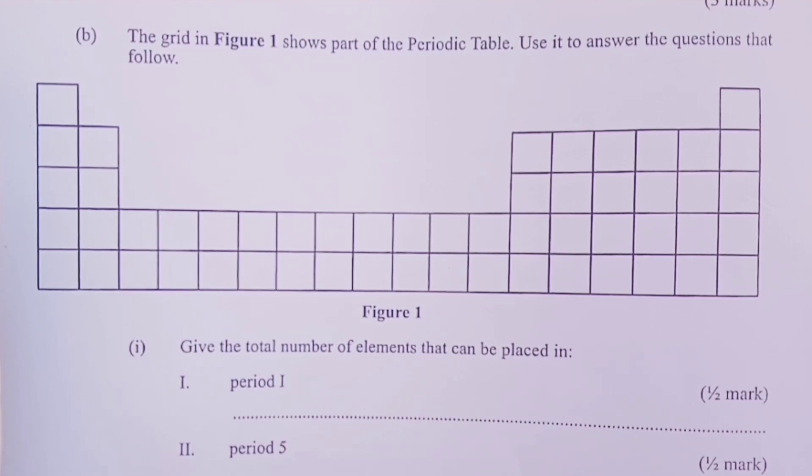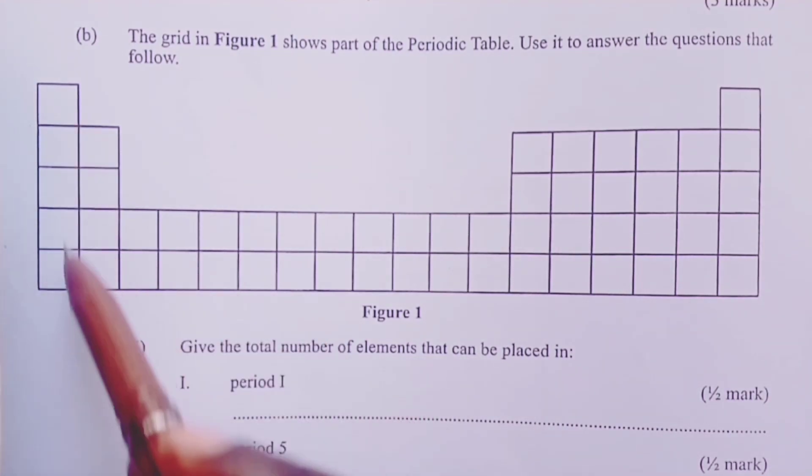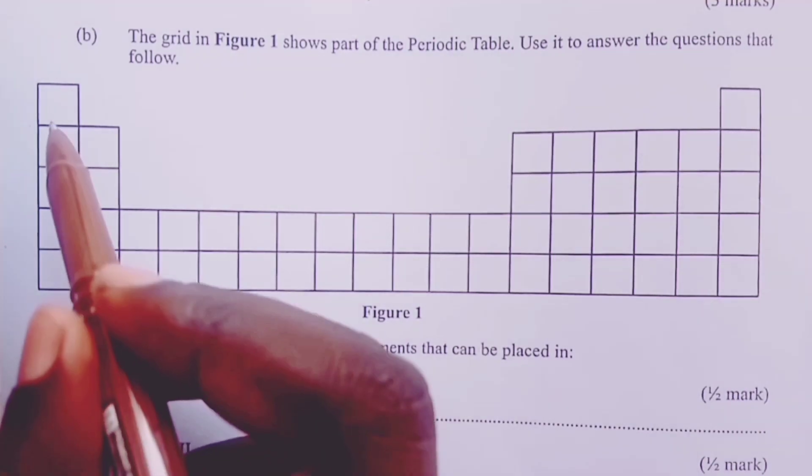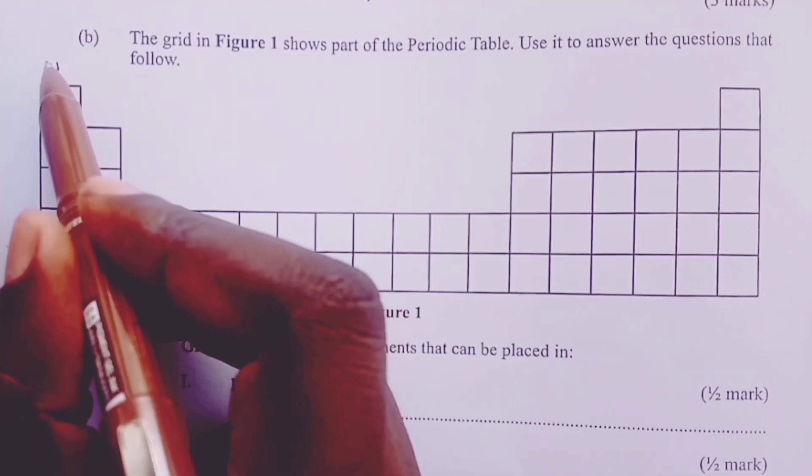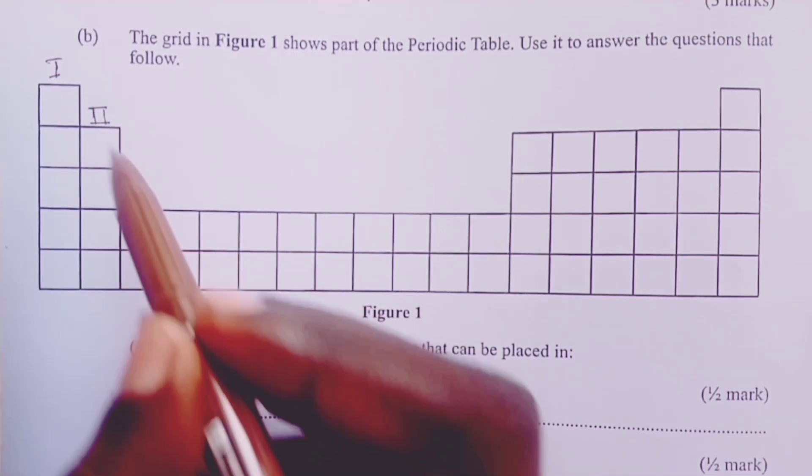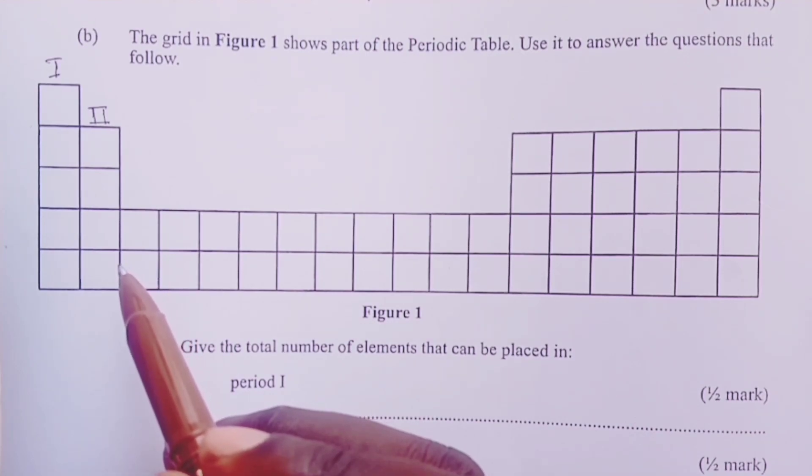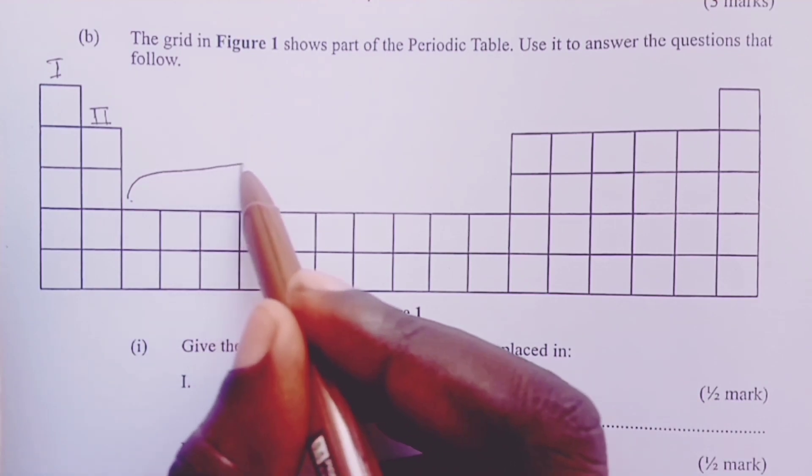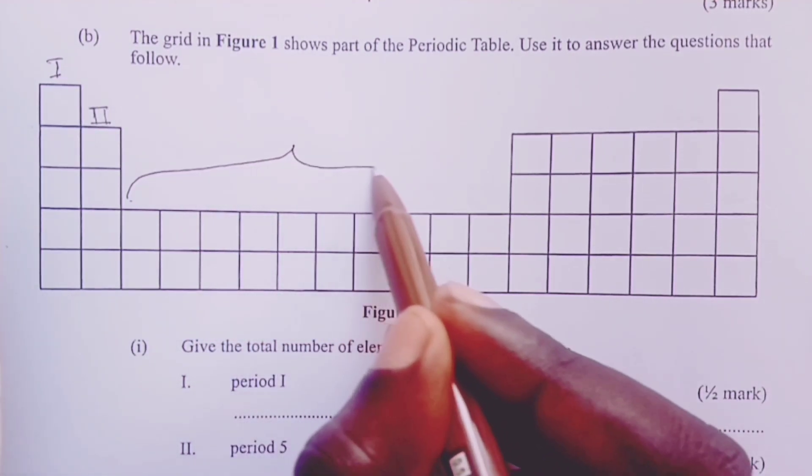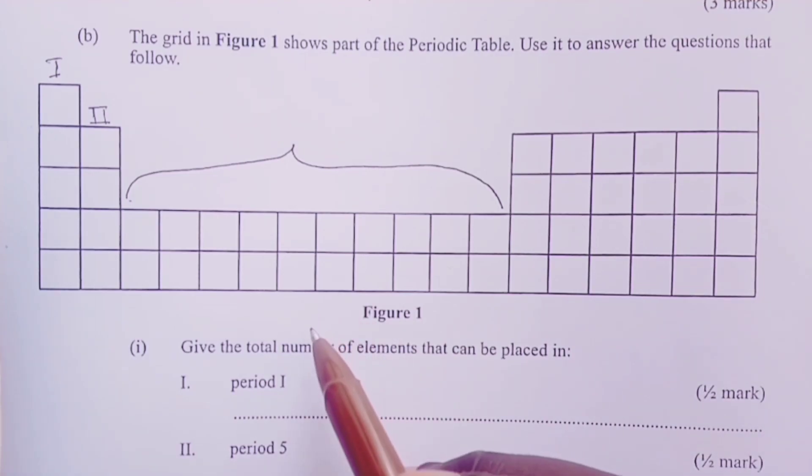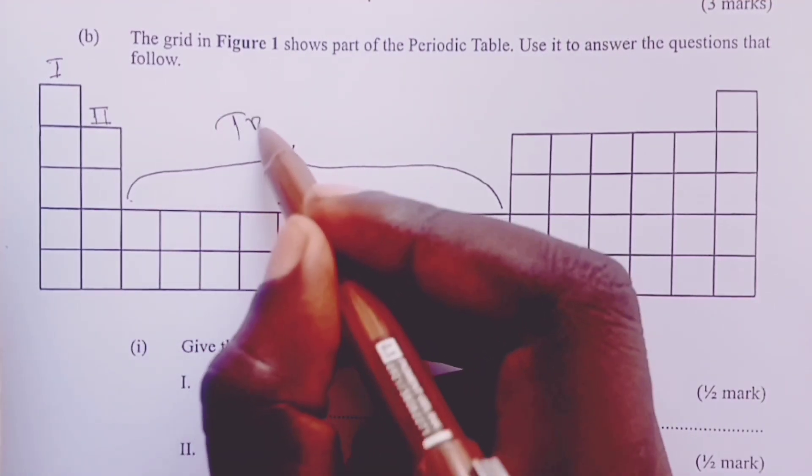Now one thing that candidates should know is that the examiner of chemistry expects us to know slightly more than what is being presented in class. For example, this grid, the vertical columns are usually the groups. So here we have group 1, we have group 2, and then we usually tell our students that in between group 2 and 3, there is a separation. And this separation, most of the time, we put it as one group and we call them transition elements.